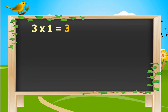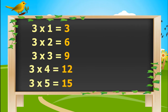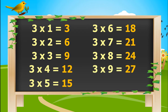3 ones is 3. 3 twos are 6. 3 threes are 9. 3 fours are 12. 3 fives are 15. 3 sixes are 18. 3 sevens are 21. 3 eights are 24. 3 nines are 27. 3 tens are 30.